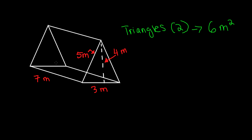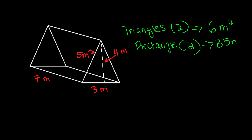And for this rectangle, it's 5 meters by 7 meters, which is 35 meters. So this rectangle — there are two of those — is 35 meters squared. And then the base, which is also a rectangle, I'll write this as B rectangle for base rectangle. It has a width of 3 and a length of 7. So 7 times 3 is 21.